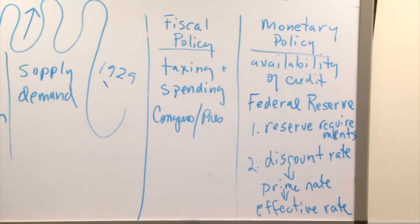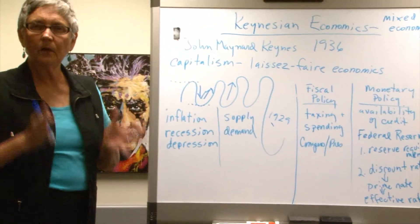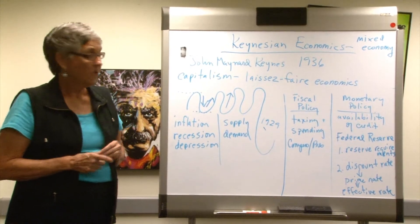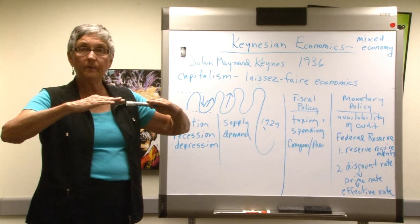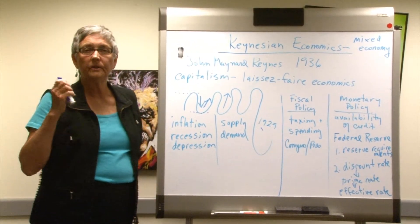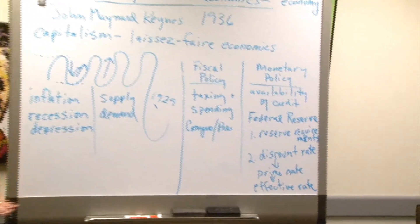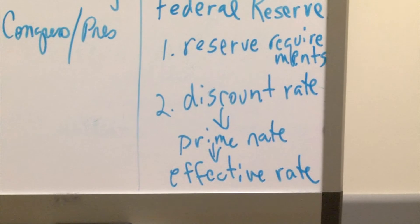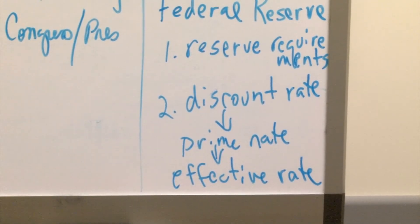One tool is called Reserve Requirements. You want to get a loan — you go to the bank, and the bank says for every dollar I loan you I've got to keep a dollar or two dollars or fifty cents in the bank in case there's a run on the bank. To discourage lending, they can raise the reserve requirements — they have to keep more money in the bank, so there's less money to loan. The second tool is the discount rate: how much does the Federal Reserve charge banks that borrow from it in interest? If they want to dampen down the economy, they raise the discount rate, meaning banks pay more, meaning you pay more to borrow money. The discount rate affects the prime rate banks charge their best customers, which affects the effective rate you and I pay when we get a loan.